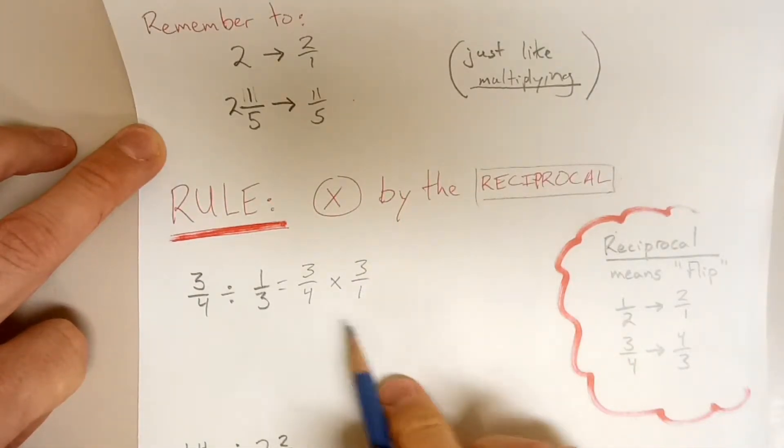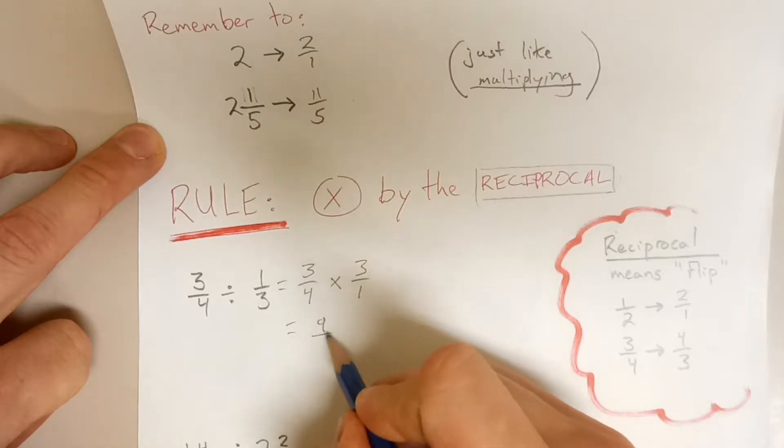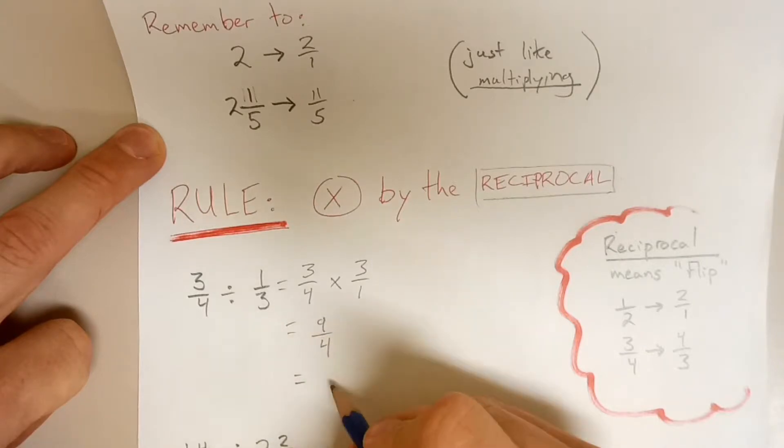Now we just follow the rules of multiplying. So multiply the tops, multiply the bottoms, we get 9 over 4. Convert that to a mixed number, 2 and 1 quarter.